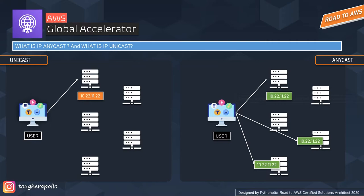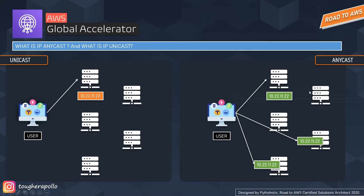A unicast address is a network addressing and routing methodology where you have a single unique IP attached to an endpoint, making a one-on-one communication — essentially a single IP communication. For example, you want to download a file from an FTP server; it's impractical to have two FTP server endpoints with the same IP. The downside is that if the server is very far from the user it will be slower to access, and as a single IP communication it is prone to vulnerabilities and DDoS attacks because it is a single point of contact.